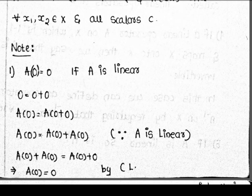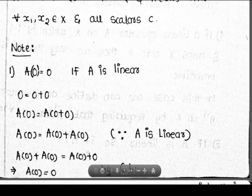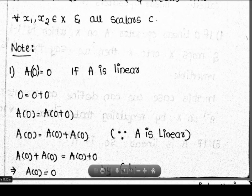A(0) = A(0) + A(0), because A is linear. Since Y is a vector space, A(0) + A(0) = A(0) + 0 vector in Y. By the cancellation law, A(0) = 0.